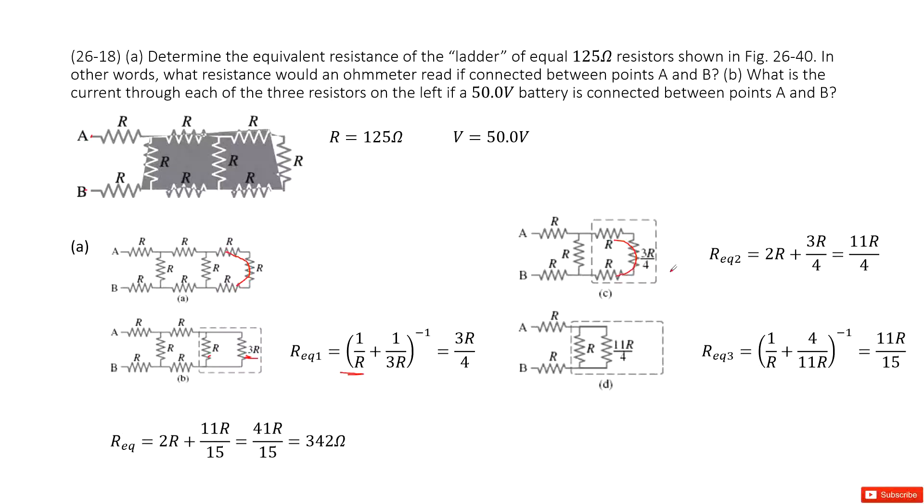So the equivalent resistance should be 2R plus 3R over 4. Add them together. You get an answer there. And then we replace this box with 11R over 4.